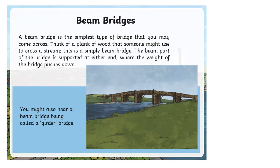A beam bridge is the simplest type of bridge you may come across. Think of a plank of wood that someone might use to cross a stream — this is a simple beam bridge. The beam is supported at either end, where the weight of the bridge pushes down. You might also hear a beam bridge called a girder bridge.